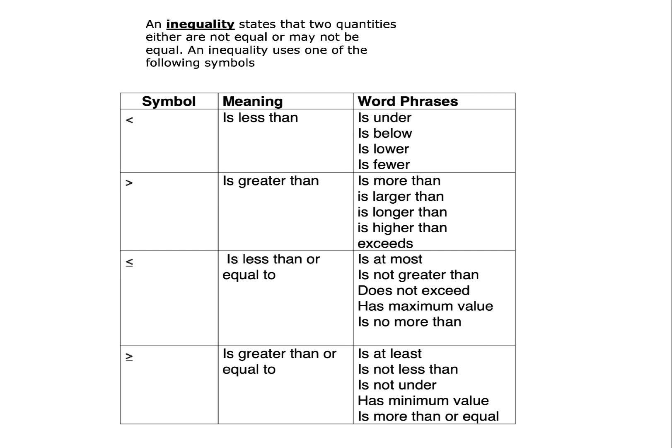An inequality is a relation that makes a non-equal comparison between either two numbers or two mathematical expressions. It basically states that the two quantities either are not equal or may not be equal. An inequality uses four symbols: the less than symbol, the greater than symbol, less than or equals, and greater than or equals.